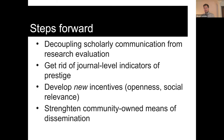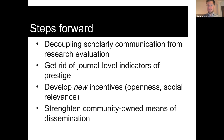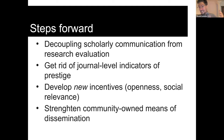A few steps forward to improve accessibility: we need to remember that accessibility is a function of publication practices, so we need to work on those to improve research overall. We need to decouple scholarly communication — dissemination from research evaluation. Getting rid of journal-level indicators of prestige would also lead to more equality. We need to develop new incentives so that making research open is considered inherently positive and valued by research institutions. And as we've seen in the data, when research is not owned by top publishers, it's more likely to be open, so we need to strengthen community-owned means of disseminating research.